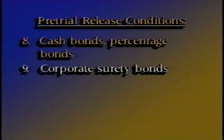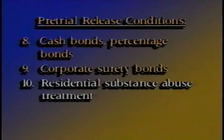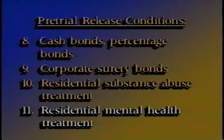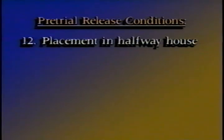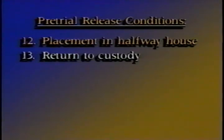Two other closely related release conditions are residential substance abuse treatment and residential mental health treatment. These community-based conditions are intended for defendants whose substance abuse or mental health problems can only be controlled by inpatient treatment. Pretrial services may have residential facilities under contract for immediate admittance. Placement in a halfway house — if such facilities exist in your community — can be a useful means of ensuring control and supervision, providing needed services, and avoiding the cost of commitment to jail or a detention facility.